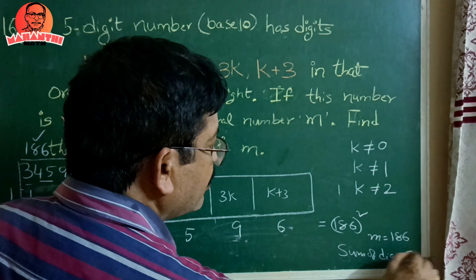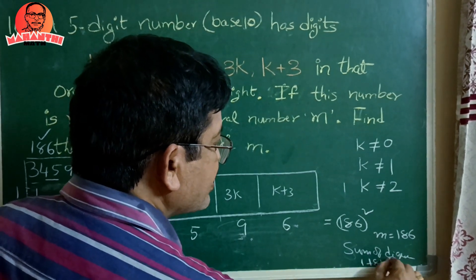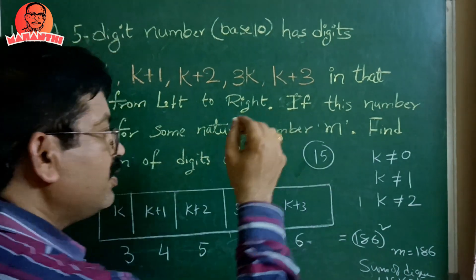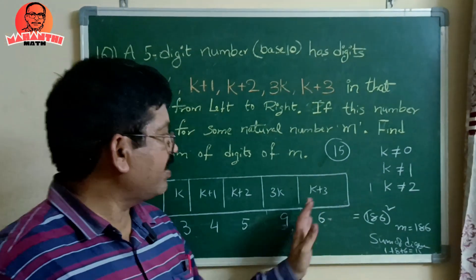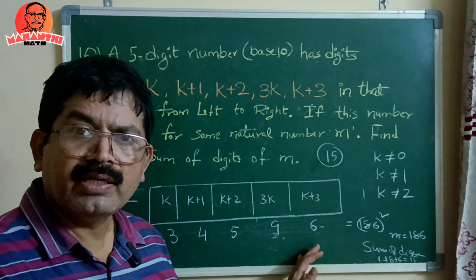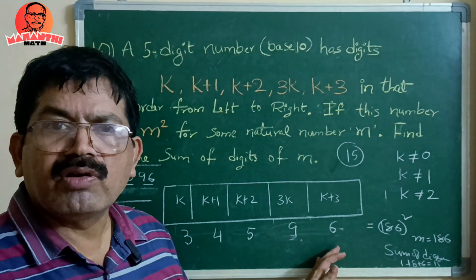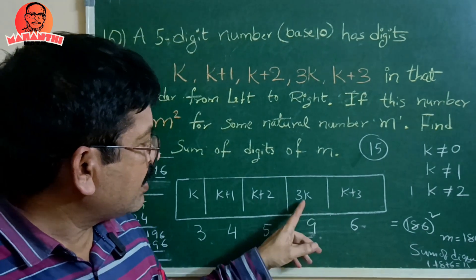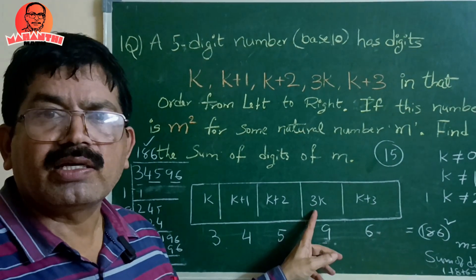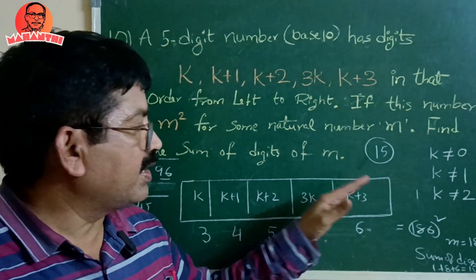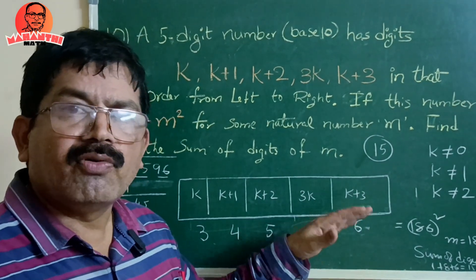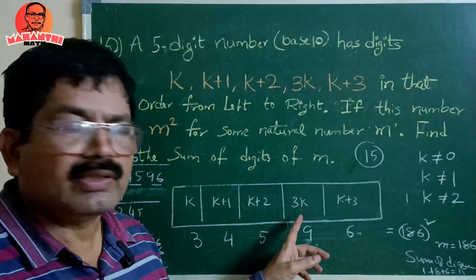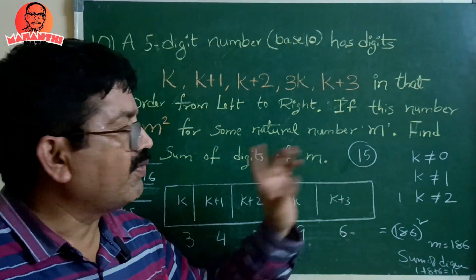Therefore m = 186, and the sum of digits equals 1 + 8 + 6 = 15. You might wonder why we didn't check k=4 and above — when k=4, the digit 3k = 12, which is not a single digit, so k=4 and higher are all invalid. Thus the answer is 15.